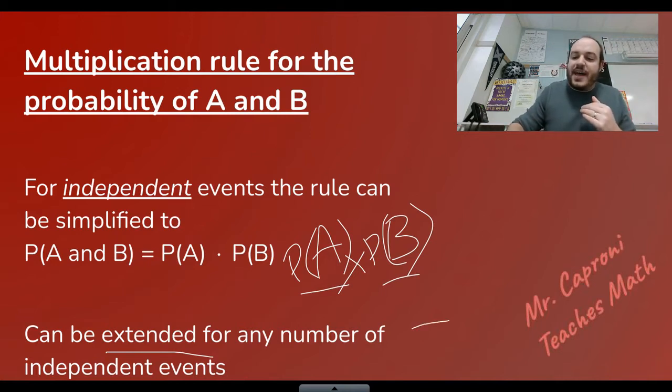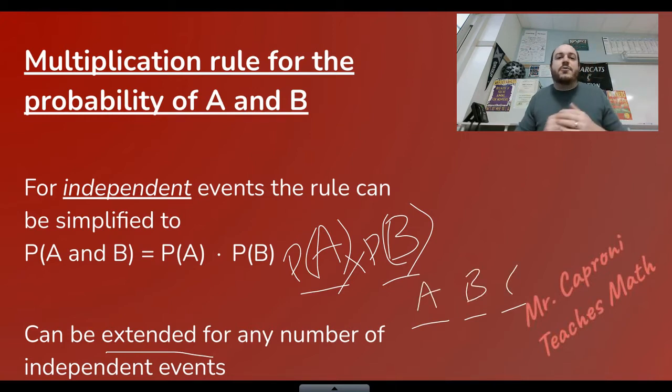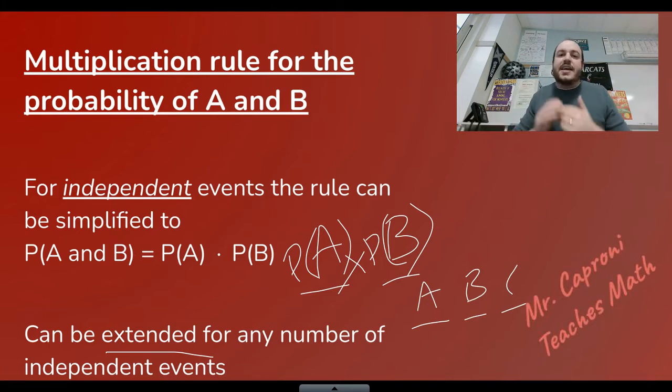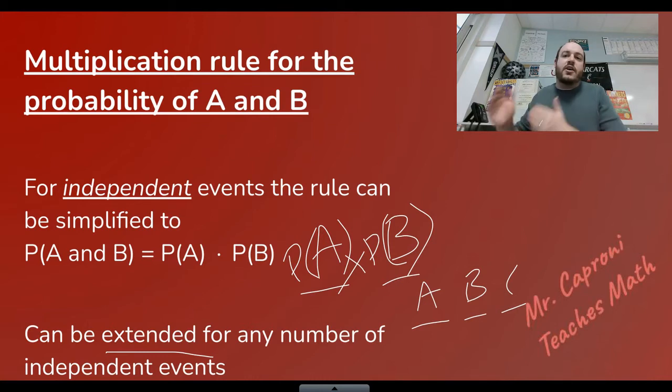Another thing to keep in mind is that this can be extended for any number of independent events. For example, with three events A, B, and C, we can take the probability of A times B times the probability of C given that the others have occurred. You can extend both formulas for as many events as you need. For the rest of this video, I'll show examples — including some tricky real-life applications of the multiplication rule.